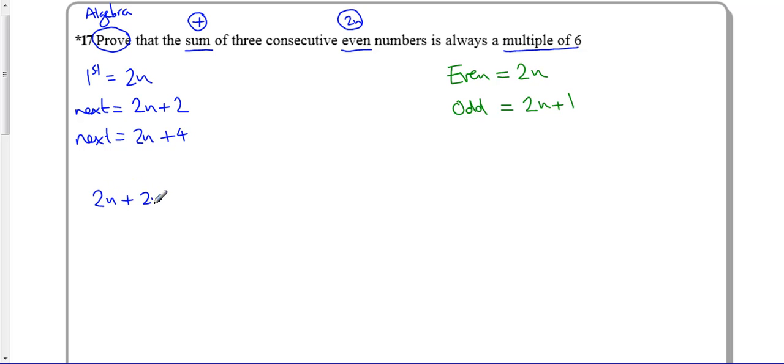So 2n plus 2n+2 plus 2n+4 is equal to... 2, 4, 6... 6n+6.